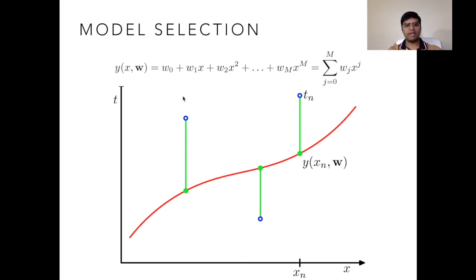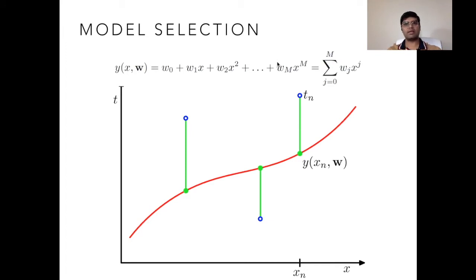Once you have trained this model on the training set — the set of points for which input and output are available — you want to test it on separate points not included in training. Those separate points on which the model's performance is evaluated are known as the test set. But if you have a model that gives zero error on the training set, will you select that as a good model?